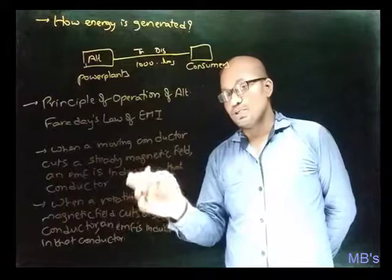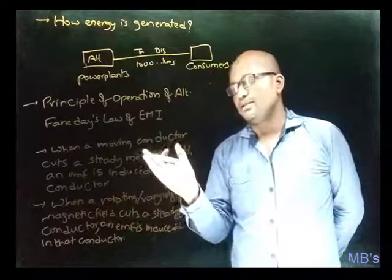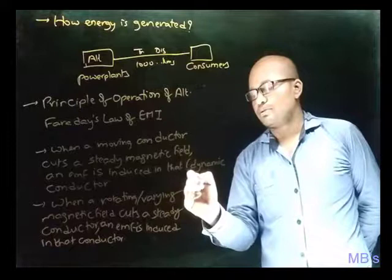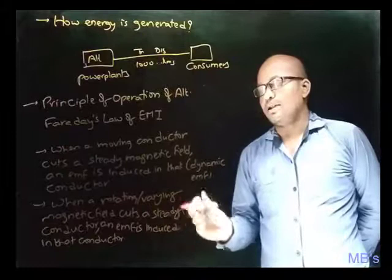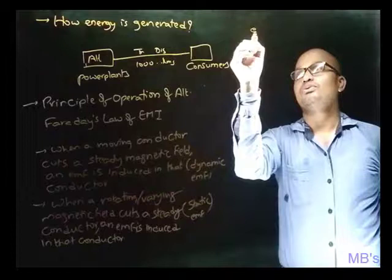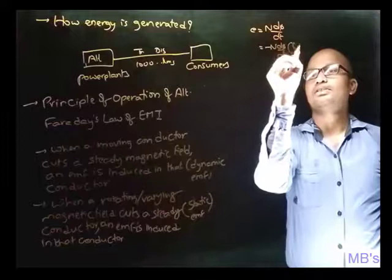By observing these two statements, note that in order to get EMF induced in the conductor, either the conductor must be in motion or the magnetic field must be in motion. The EMF induced in the first case is called dynamic EMF because the conductor is moving, and the EMF induced in the second case is called static EMF because the conductor is in a static position. These statements come under Faraday's first law. Faraday's second law gives the EMF equation: e = N dφ/dt, where N is the number of conductors and φ is flux. The minus sign is given by Lenz's law.